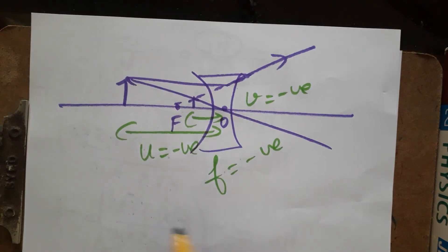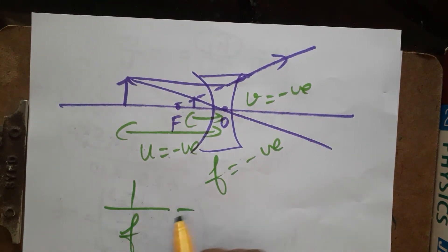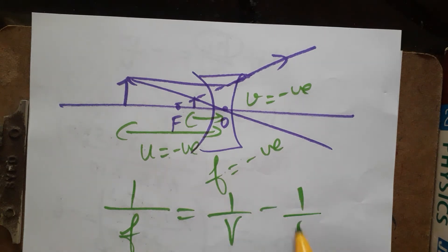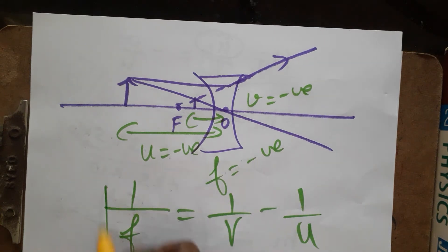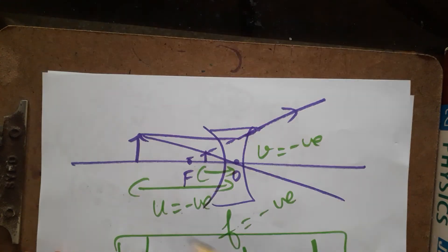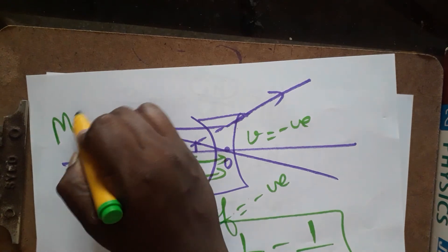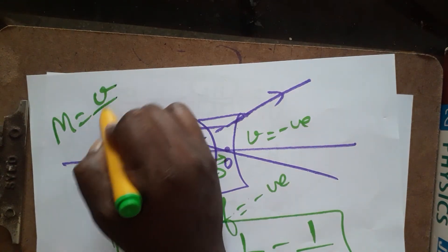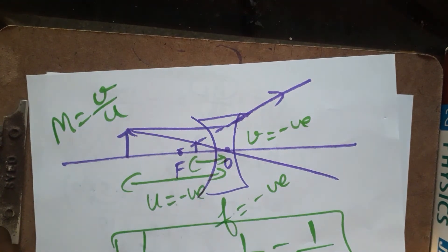Now we know the lens formula: 1/f = 1/v − 1/u. The magnification formula is: magnification = v divided by u. We will use these two formulas to solve the problem.